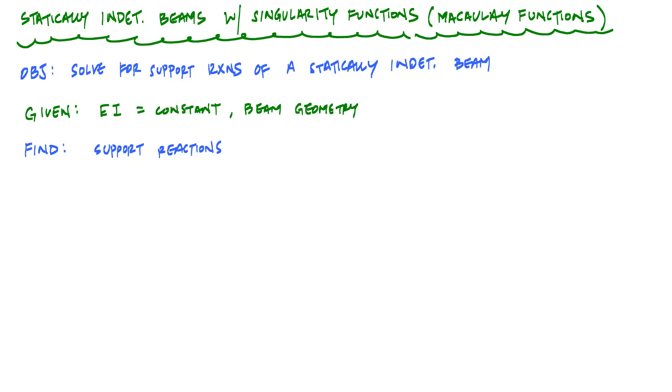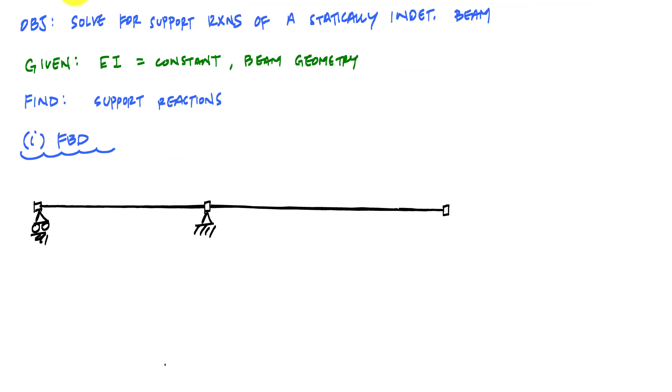We'll have a beam that looks like this. It's got a roller support at A, a pin support at B, and a roller support at C. We've got a uniformly distributed load on this span AB and the length of the beams, 15 meters and 20 meters. And what we'd like to do is find the support reactions.